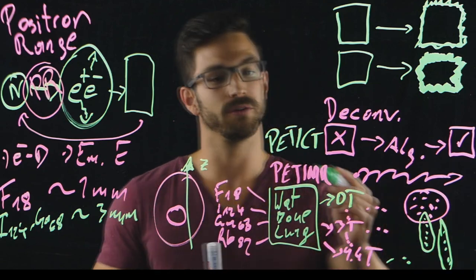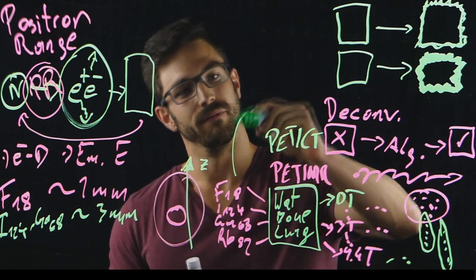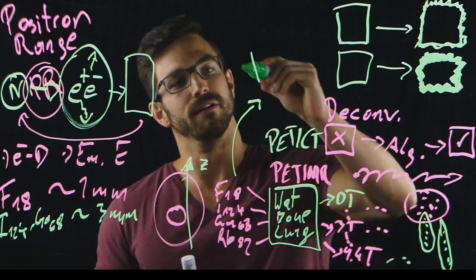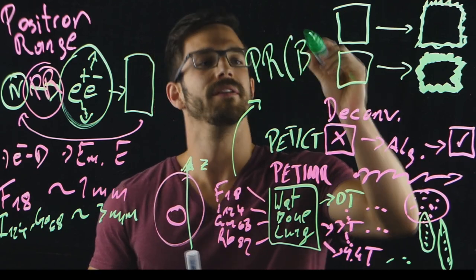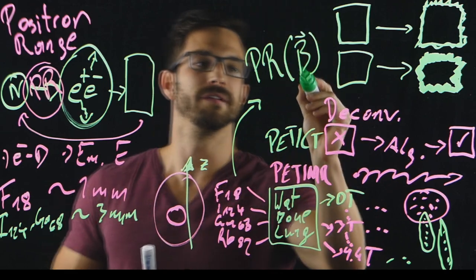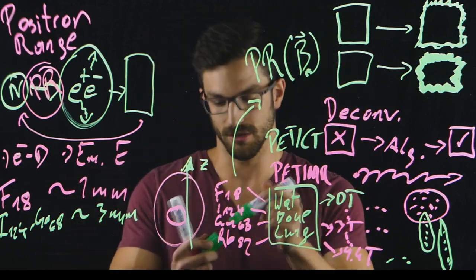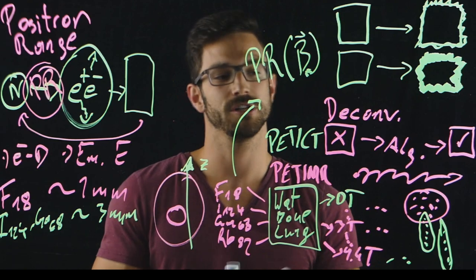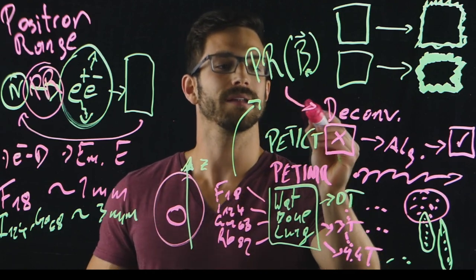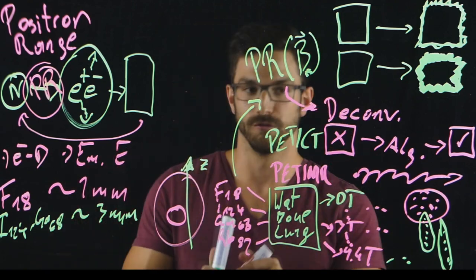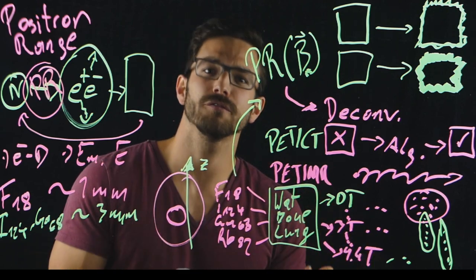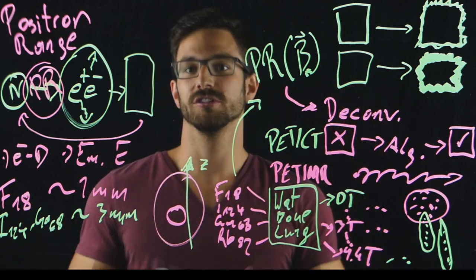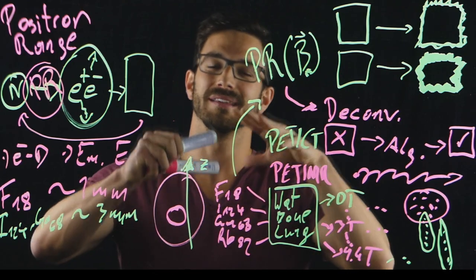So what I did was to parametrize this output. We parametrized it in a formula that represents the positron range in dependence of the magnetic field put along a set direction. This parametrization I implemented directly in an already existing deconvolution algorithm, which is an algorithm for PET-CT, and therefore expanded this deconvolution towards a setup that can be used.